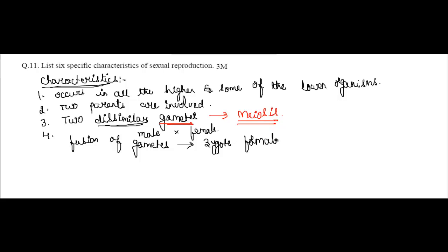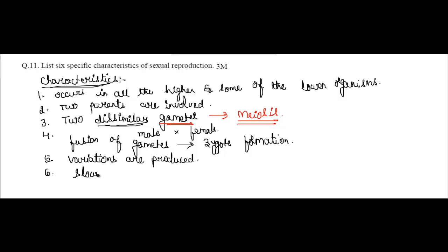Since it is a fusion of two different gametes, it actually produces variations. Next, this process is comparatively slower than asexual reproduction. So these are the six specific characteristics of sexual reproduction.